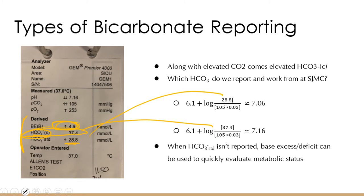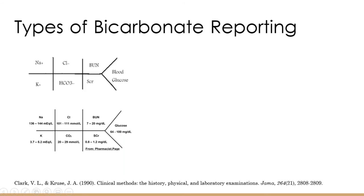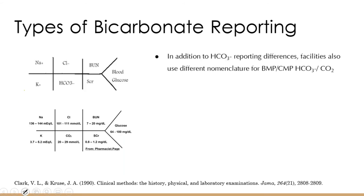In addition to bicarb on your ABG, you also have bicarb reporting on your chem panel. It's actually reported as total CO2, which causes a lot of confusion. Total CO2 is mostly bicarb but also takes into account dissolved CO2, so they're more or less synonymous. The problem is from an acid-base standpoint, CO2 is a Lewis acid and bicarb is the conjugate base of carbonic acid — they're complete opposites.